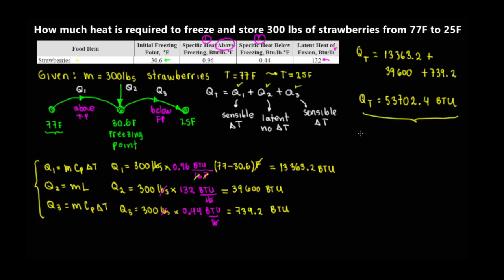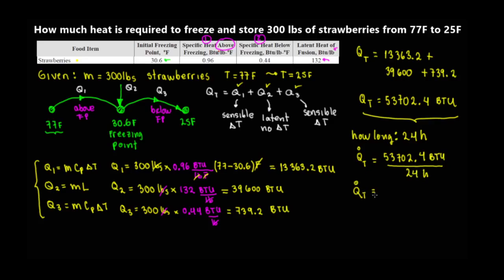Let's extend the problem: how long does this take? Say we want this done in 24 hours. We calculate the heat rate by dividing total heat by time. Heat rate = 53,702.4 BTU ÷ 24 hours = 2,237.6 BTU/hr. That is the required heat removal rate.